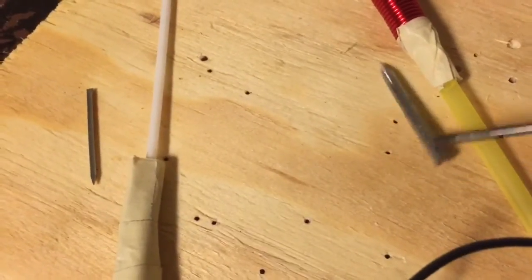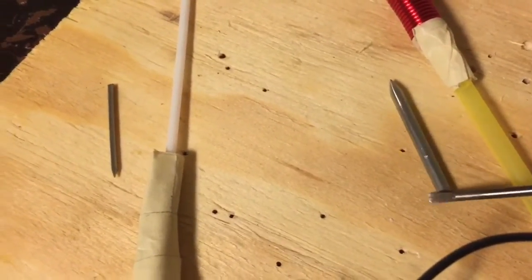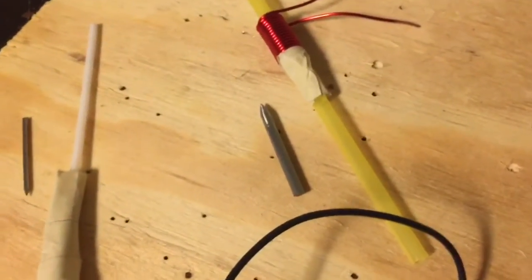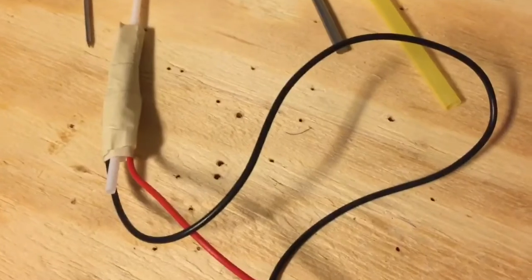And for the projectiles, I'm using these nails. As you can see here, sawing off nails. Narrow one for the coffee straw and the wider one for this bigger straw. So let's test it out and see what happens.